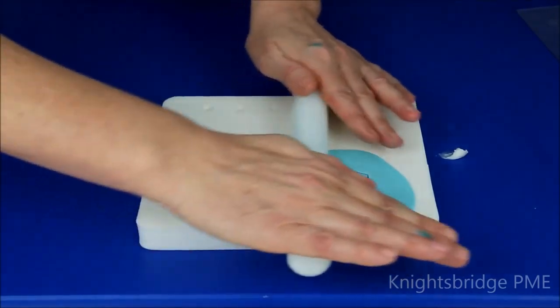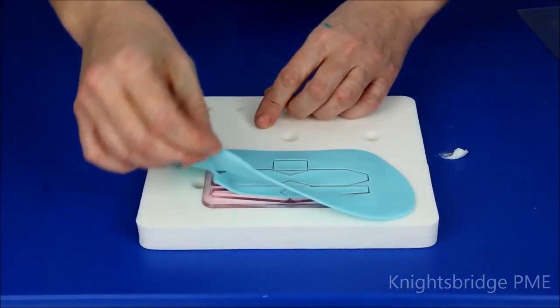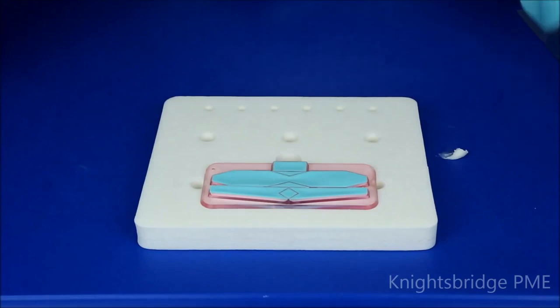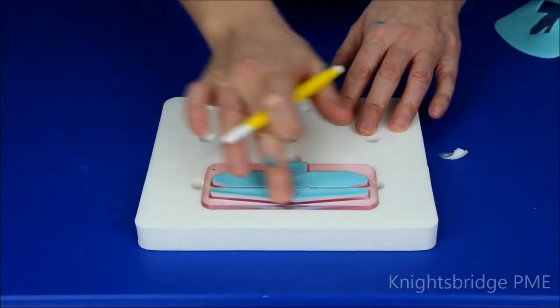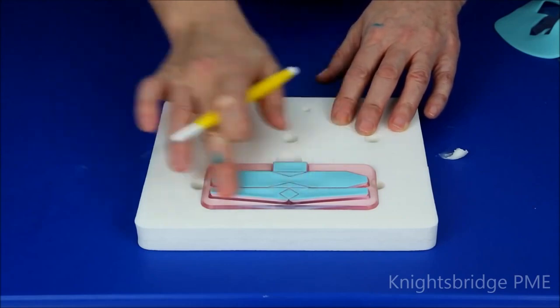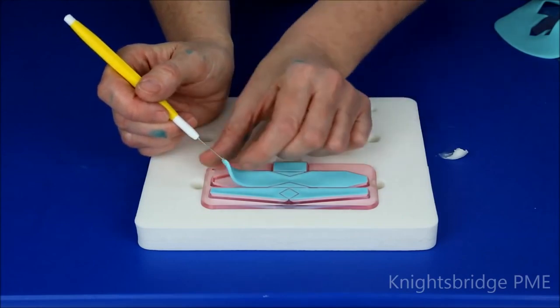As many times as you want until you're happy with the result. Then just pull away the excess paste. Again, just to define the area if you need to. I'm just going to use a scriber tool just to help myself remove the paste from the cutter.